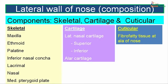The lateral wall has three components: skeletal, cartilaginous, and cuticular. The skeletal components are made up of the maxilla bone, the ethmoid, palatine bone, inferior nasal conca (which is an independent bone), the lacrimal bone, nasal bone, and the medial pterygoid plate. The cartilaginous component is formed by the lateral nasal cartilages — two cartilages, superior and inferior — and by two to three small alar cartilages. The cuticular part is fibro-fatty tissue seen at the ala of the nose.